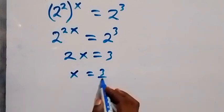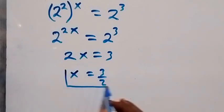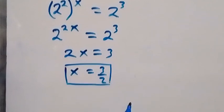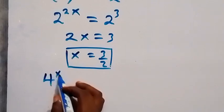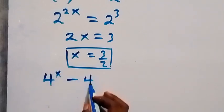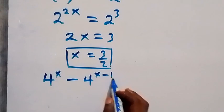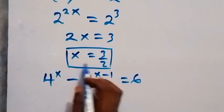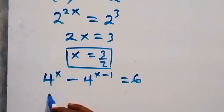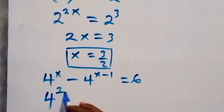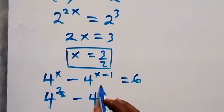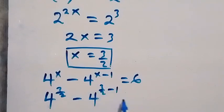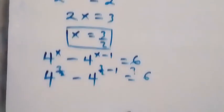Dividing by 2, we have x equals 3 over 2. Now let's check: from what we have, that is 4 raised to power x minus 4 raised to power x minus 1 equals 6. Putting x equals 3 over 2, we have 4 raised to power 3 over 2, minus 4 raised to power 3 over 2 minus 1, which should equal 6.